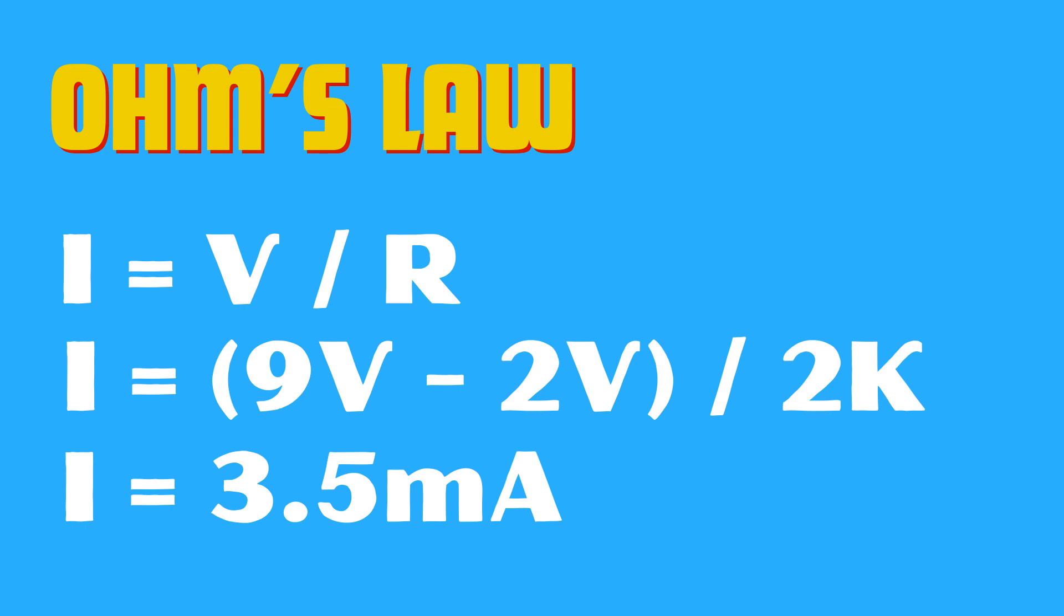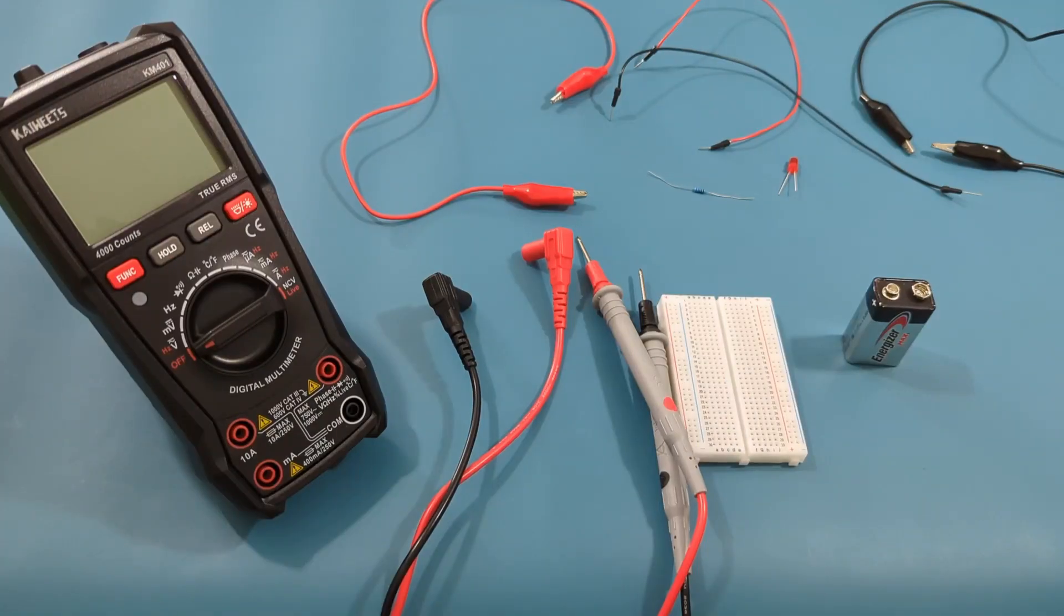We come up with I, or current, equals to 3.5 milliamperes. Since we now know what current to expect, we can measure it with a multimeter.